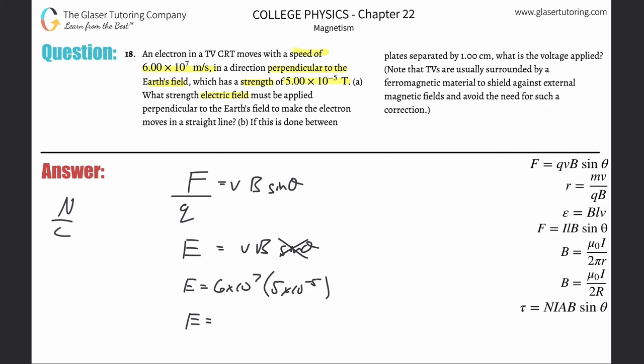So this is going to be 6 times 10 to the seventh multiplied by 5 times 10 to the minus fifth: 3000, or in other words, 3.00 times 10 to the third newtons per coulomb. Beautiful, so that takes care of letter a.